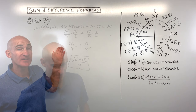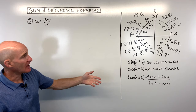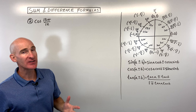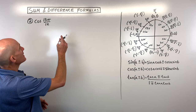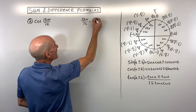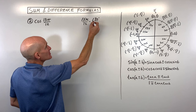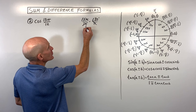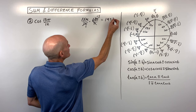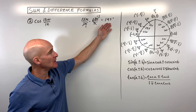For example number two, we've got the cosine of 13π/12. That's not an angle on our unit circle, so we want to find two angles that add or subtract to give us 13π/12. Since radians can be tricky, let's convert: multiplying by 180°/π, the π's cancel, and 12 goes into 180 fifteen times, so 13 × 15 = 195 degrees. What two angles add to 195? We could do 150 plus 45.